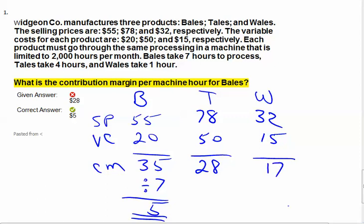If we stopped right there, we would look at it and say our most profitable product would be bales with a contribution margin of $35. That's true, except for this constraint—that machine. We have to look at each one based on how many hours it takes. For tails, I'm going to divide by four hours, and that is $7. For whales, I divide by one hour, which is $17. So now, our contribution margin per constraint hour—the most profitable product we can do—are the whales.